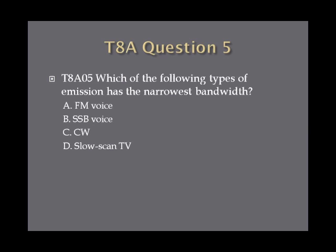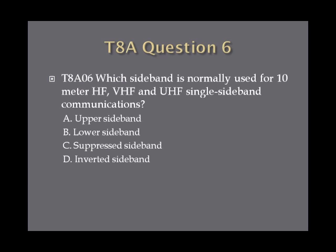Question 5: Which of the following types of emission has the narrowest bandwidth? A. FM voice. B. SSB voice. C. CW. Or D. Slow scan TV? Question 6: Which sideband is normally used for 10-meter HF, VHF, and UHF single sideband communications? A. Upper sideband. B. Lower sideband. C. Suppressed sideband. Or D. Inverted sideband.